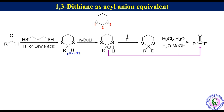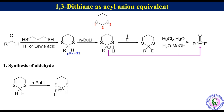Now let's see what type of molecules we can make using the dithiane umpolung strategy. The first is synthesis of aldehyde. Unsubstituted 1,3-dithiane reacts with n-butyllithium to produce a carbanion, which is then allowed to react with an alkyl halide to produce 2-alkyl-1,3-dithiane. 2-alkyl-1,3-dithiane after hydrolysis in the presence of mercuric cation gives aldehyde.